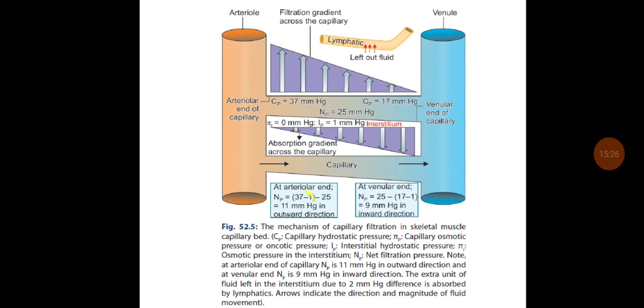At the arteriolar end, the net filtration pressure is the hydrostatic pressure (37 mmHg) minus the interstitial hydrostatic pressure minus the oncotic pressure (25 mmHg), which comes to around 11 mmHg in an outward direction — moving fluid from the capillary to the interstitial space. At the venular end, the oncotic pressure overrules the hydrostatic pressure, and the net pressure is around 9 mmHg in an inward direction — moving fluid from the interstitial space back into the capillary.